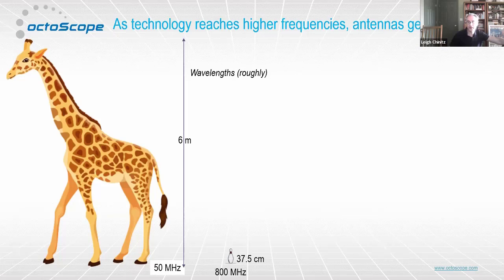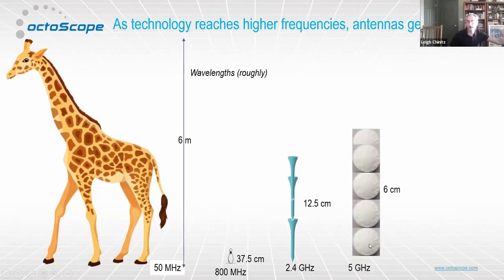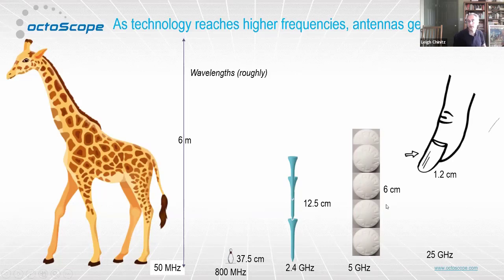At 2.4 GHz we're talking about about 12 centimeters — a few golf tees. At 5 GHz — until recently the upper WiFi band — just a set of aspirin. And if you look at millimeter wave bands, around 25 GHz, we're talking about maybe a centimeter or so — which is why in the millimeter wave bands it's possible to start building antenna arrays into small devices, because the antennas themselves are so small.